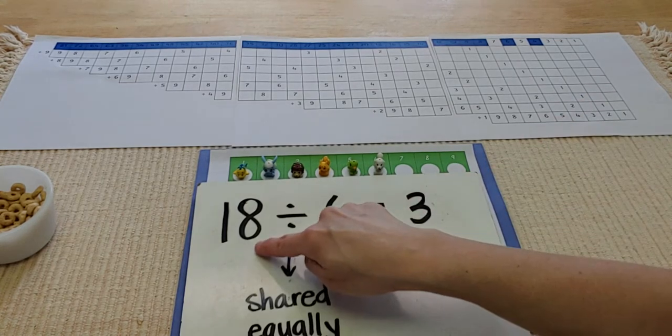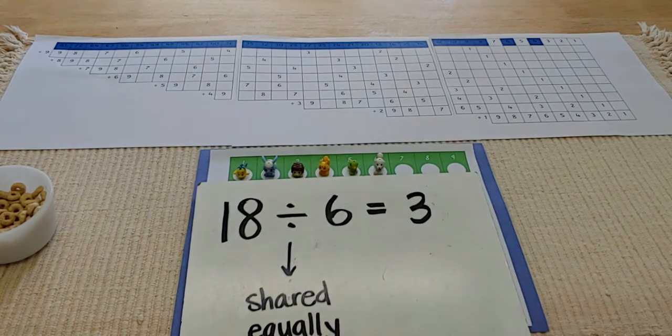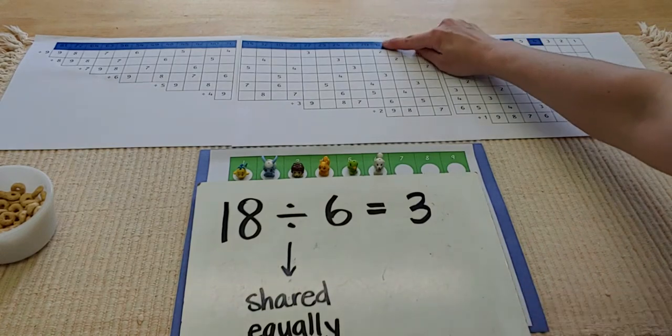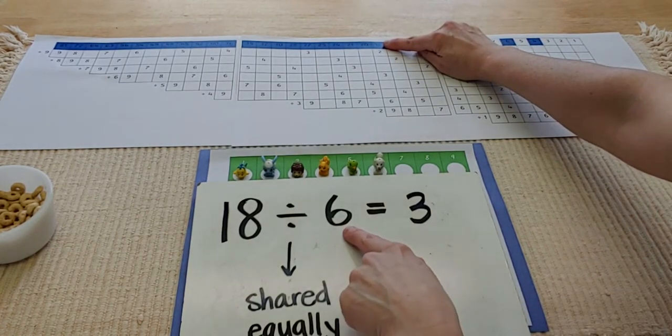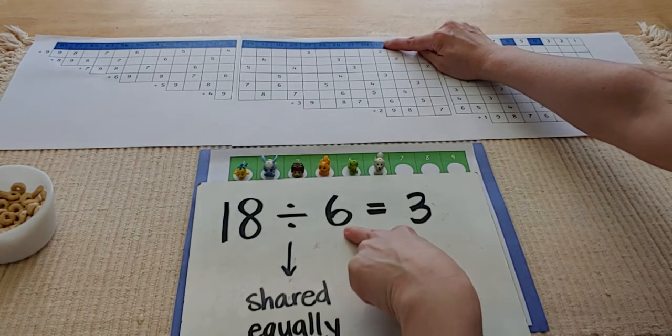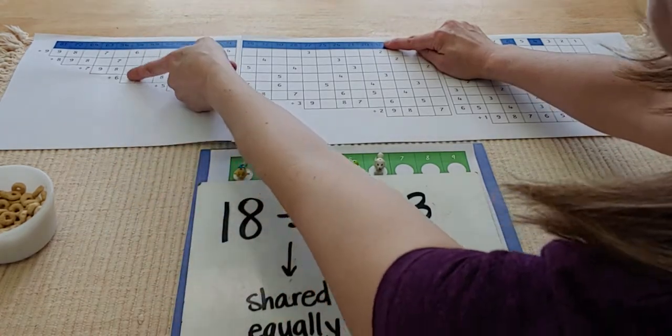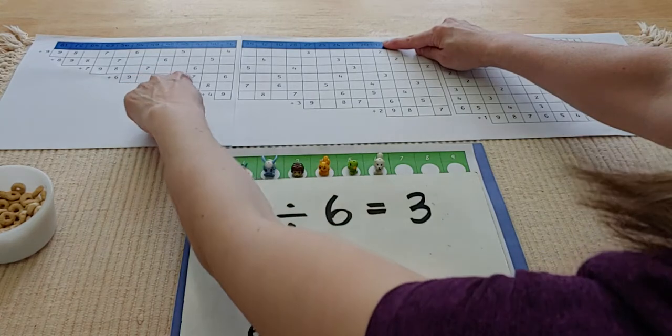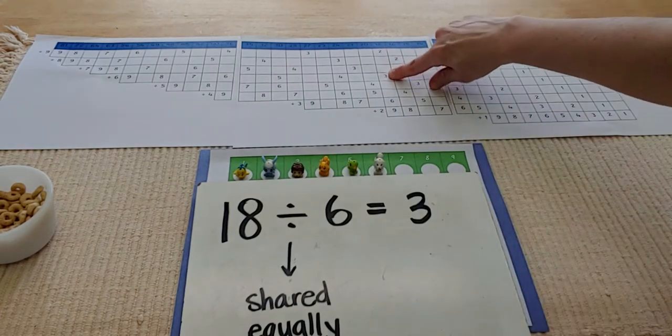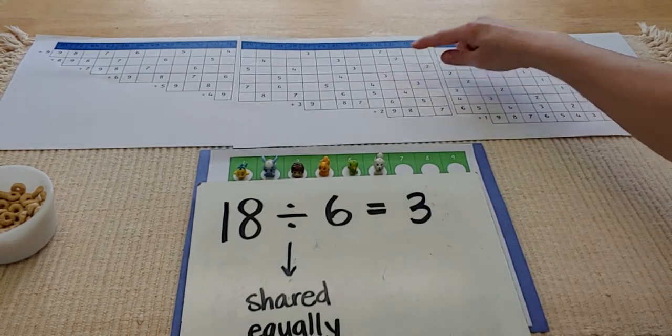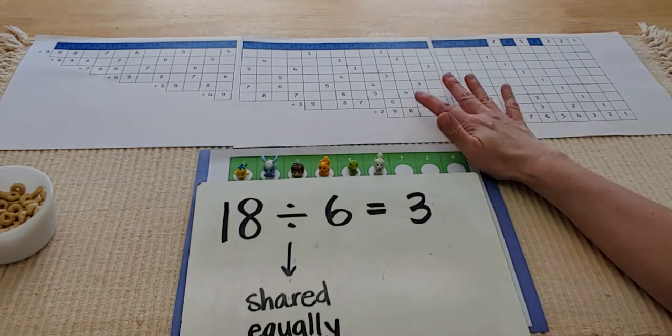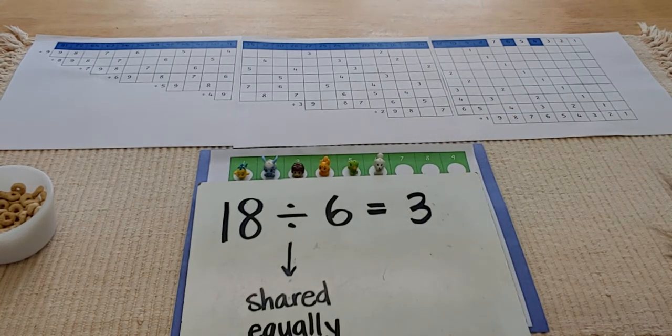You can take the 18 Cheerios that I was sharing and find the number 18 at the top. Here's 18. Now, I need to find out if 18 divided by six is really three. So now I'm going to find six on the side. I'm going to slide my finger down the finger board until they come together. And it looks like I was right. It's three. So if you're not sure if your division problem is correct, you can print one of these division finger boards and you can check your own problems without any grown-up around. You can do it all by yourself.